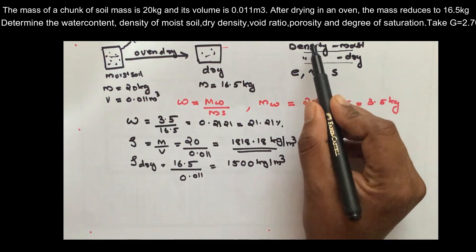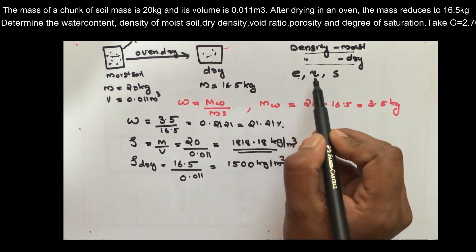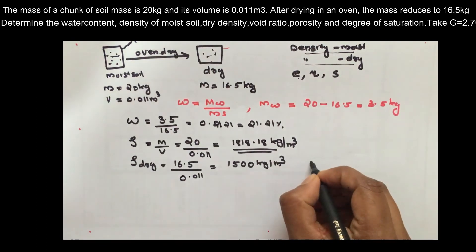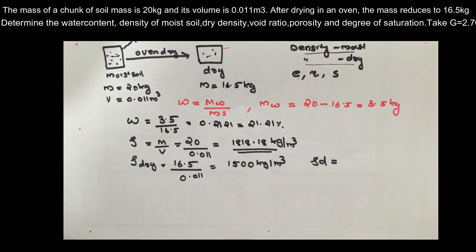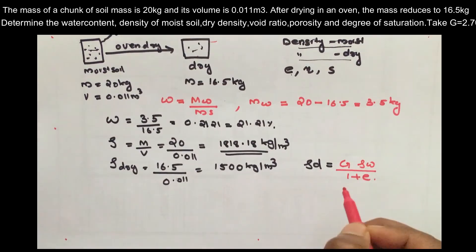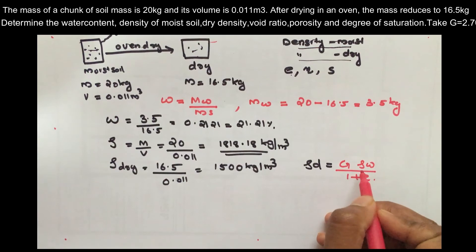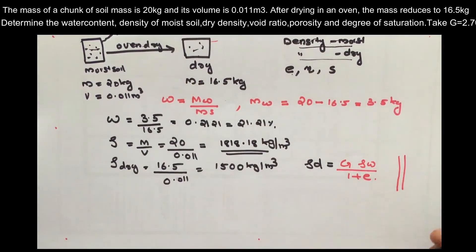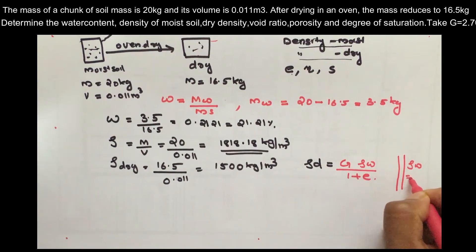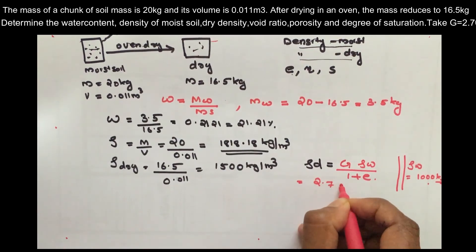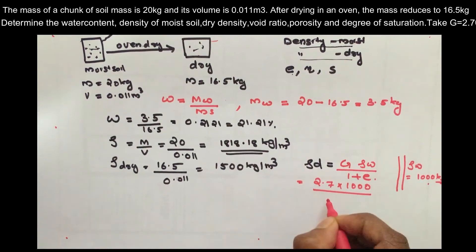Now we have three terms remaining: void ratio, porosity, and degree of saturation. We use the dry density equation: ρd equals G times ρw divided by (1 plus e). In this equation, G value is equal to 2.7 and ρw equals 1000 kg/m³. Substituting, we have 1500 equals 2.7 times 1000 divided by (1 plus e).